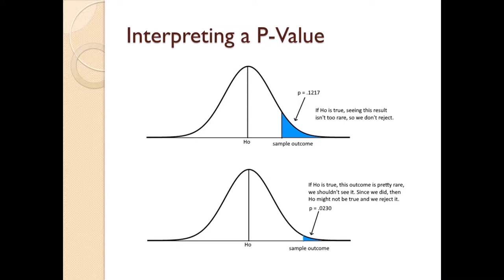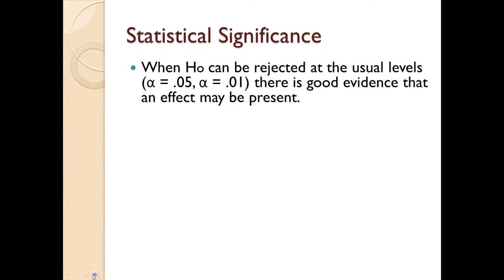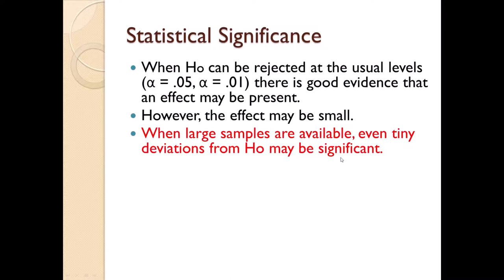The last thing we're going to look at is statistical significance versus practical significance. When H0 can be rejected at the usual level, so 0.05, 0.10, that's pretty good evidence that there's an effect present, something that makes you believe that H0 isn't true. But this effect may be small. When large samples are available, even tiny deviations from H0 may be significant. We're talking about big, big samples.